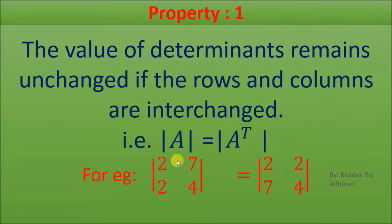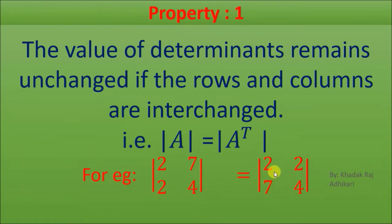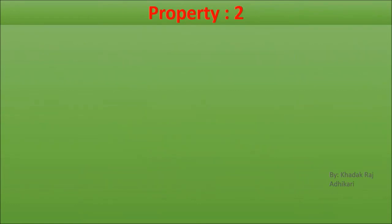You may calculate the determinant of the first one and find the value. When you transpose — when you interchange rows and columns — you can expand the determinant and check the values. Both values will come out the same. So the value of the determinant remains the same if we interchange rows and columns.